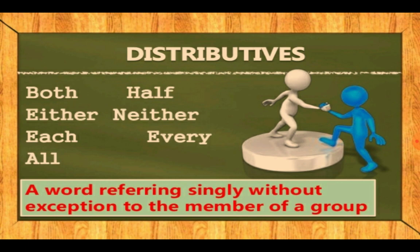Next is distributive — a word referring singly or to the number of a group. These can be used both singularly and in plural contexts. Words in this category include: both, either, each, all, half, neither, every. These words belong to distributive determiners.